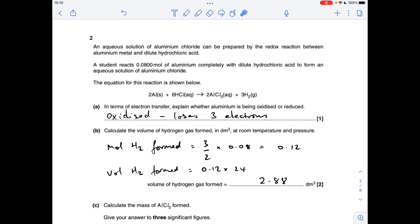Part B, the first thing we're going to do is work out how many moles of hydrogen have been formed. You can see there's a 2 to 3 ratio between the aluminium and hydrogen. So the moles of hydrogen is 3 over 2 times the moles of aluminium. To turn it into a volume in decimetres cubed at RTP, we just multiply by 24, the molar gas volume: 2.88 decimetres cubed.